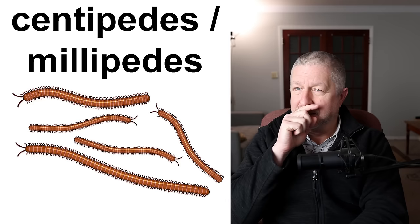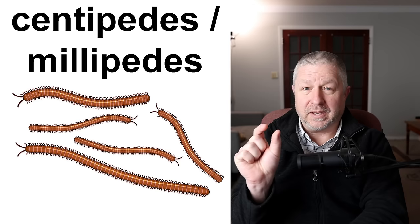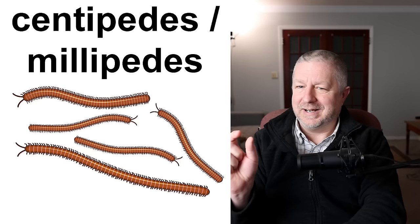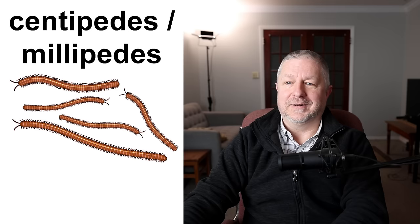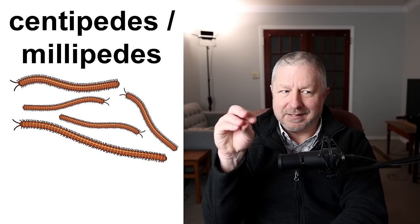Centipedes and millipedes. We have very small centipedes and millipedes in Canada — little things with many, many legs. These are probably the one thing I don't like. I find them a little bit strange looking; they have too many legs and move in a funny way.